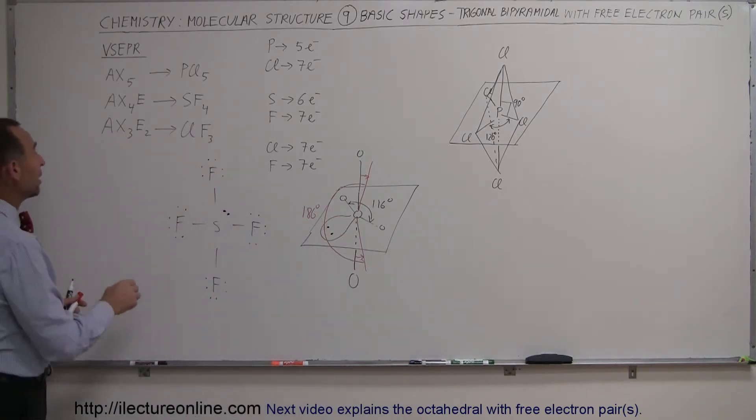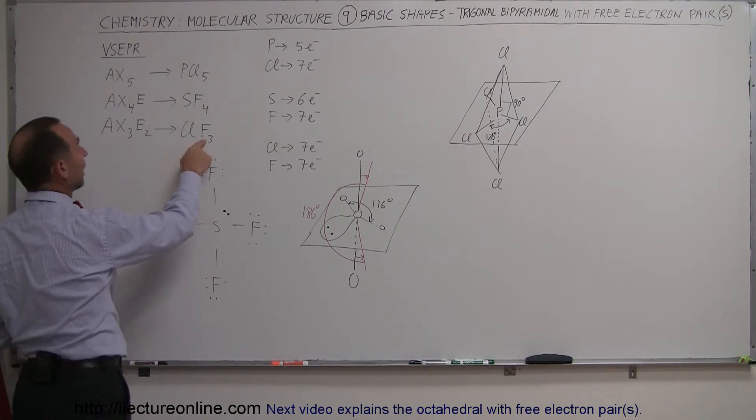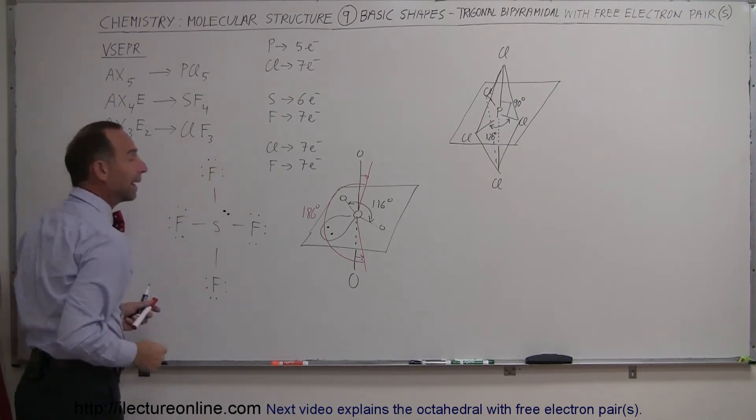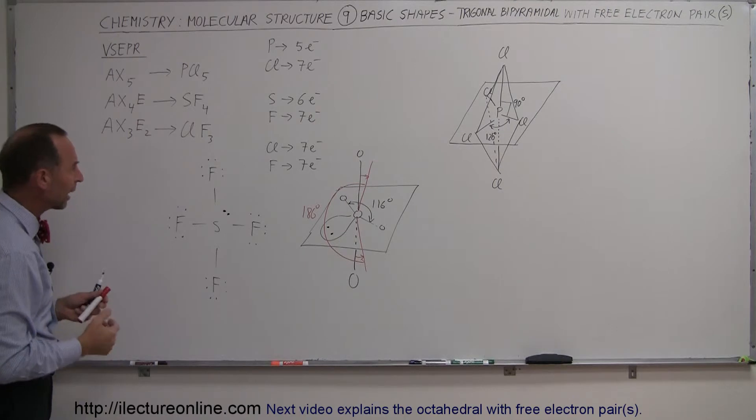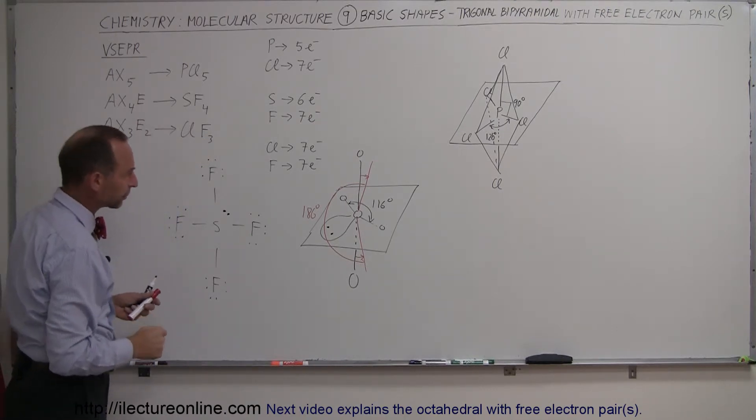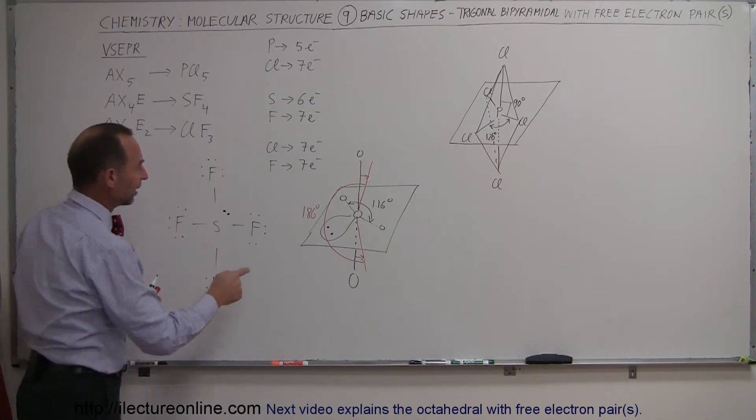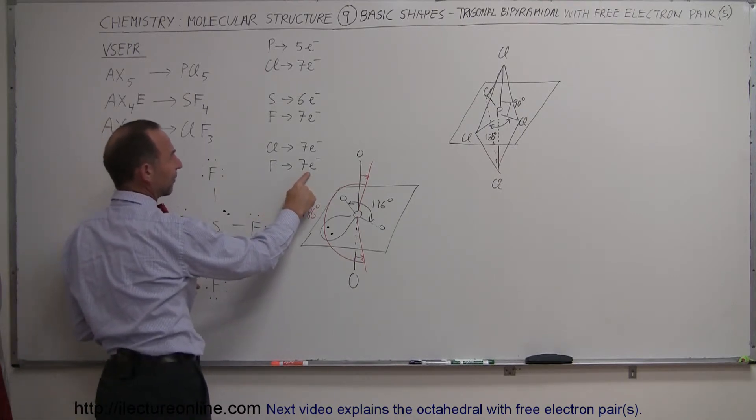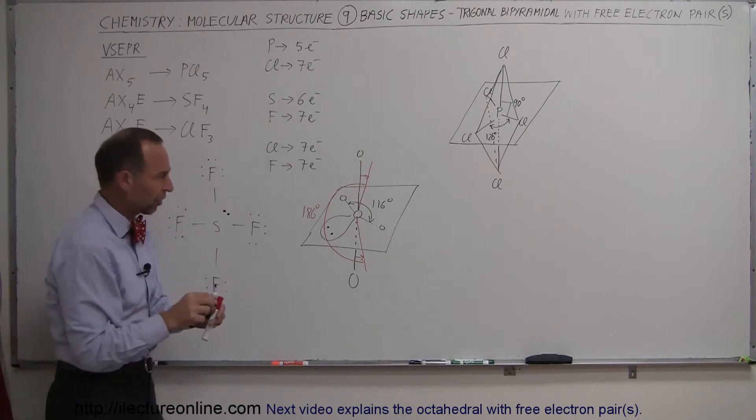Now, what happens now when we have one additional atom disappear and replaced by a second free bond pair? What would that look like, for example, with chlorine trifluoride right here? So what happens now is, let's take a look, we have, we start out with seven free electrons, so let's draw the Lewis structure of that one.